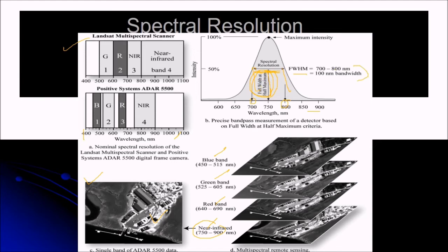This is the full width of half maximum criteria. And this is nothing but the spectral resolution. Or in other sense, you can also speak like this. That number of spectral intervals to which the sensor is sensitive to is the spectral resolution.